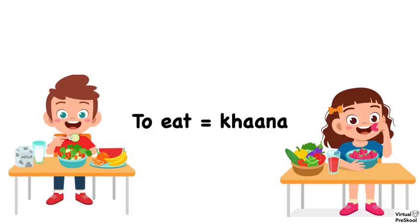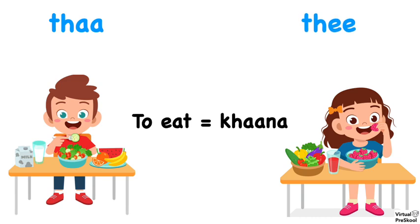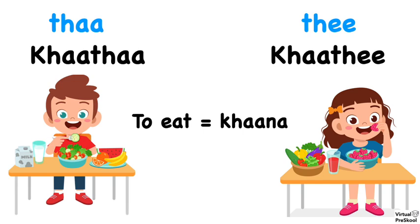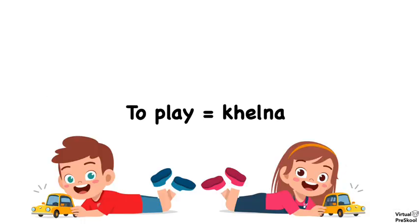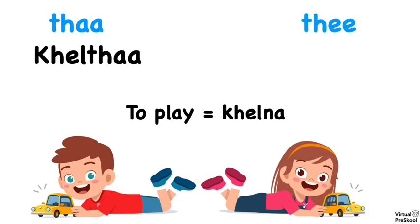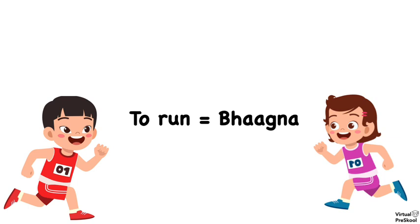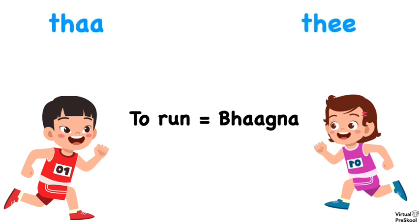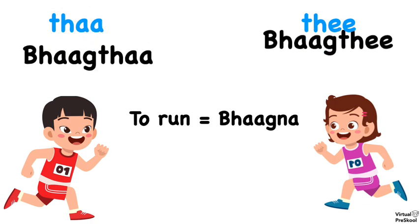Well, the ta ending is for males and ti is for females. So ta is for males, ti is for females. If we have the verb kana, it becomes kata for the boy and kati for the girl. For the verb keelna, for the boy it becomes keelta, and for the girl it becomes keelti. For bhaagna, it becomes bhaagta for boys and bhaagti for girls.